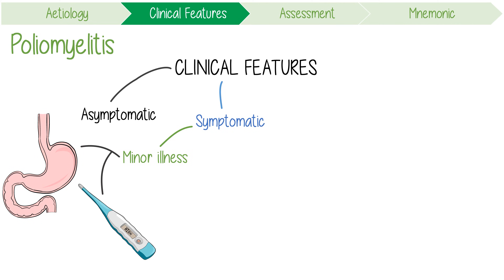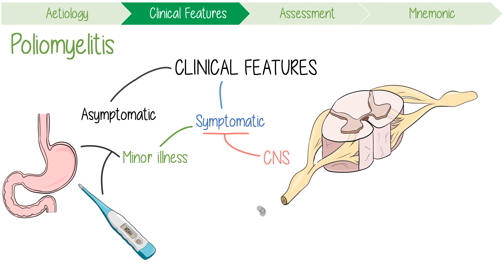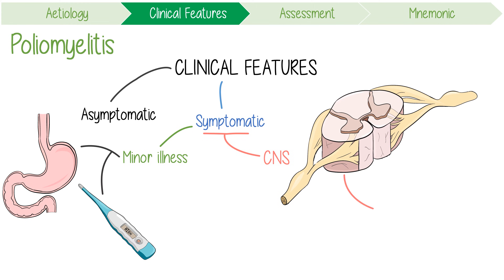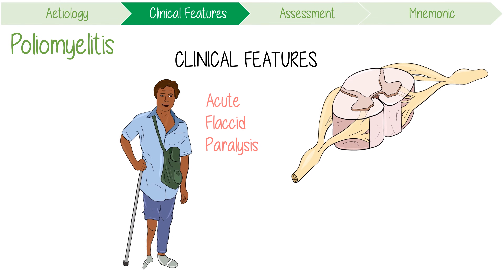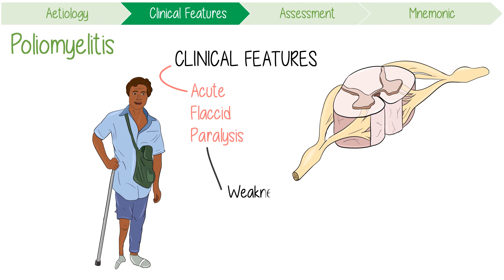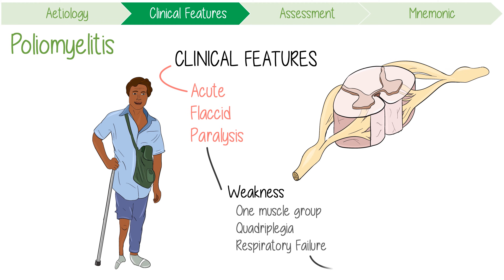However, if the infection does spread to the CNS, the destruction of motor neurons in the anterior horn can cause acute flaccid paralysis. The extent of weakness may vary, ranging from one muscle or group of muscles to quadriplegia and respiratory failure.